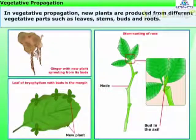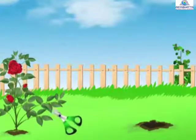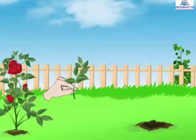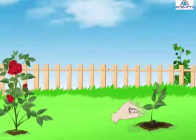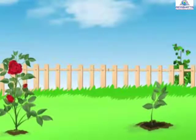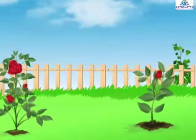Let us understand this with the help of a few examples. Cut a stem of a rose plant and bury it in the soil. Water it regularly. After a few days, the stem develops into a new plant.